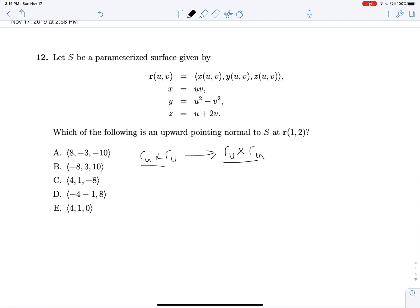So in this case, we can reform R of UV with these values, these expressions, which they say X, Y, and Z are equal to. So R of UV is going to be UV, U squared minus V squared, U plus 2V.